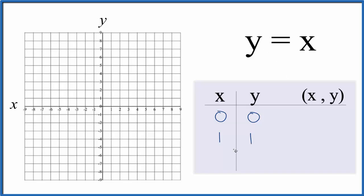How about x is negative 1, y equals negative 1. So these are the points that we'll graph for the linear equation y equals x.